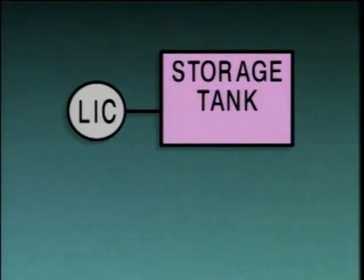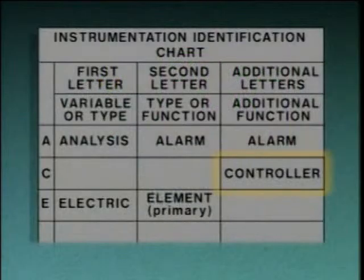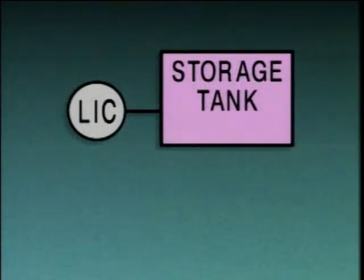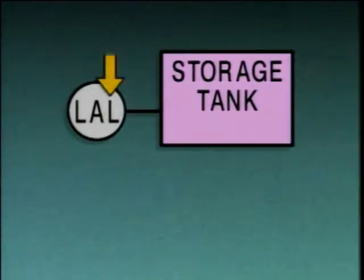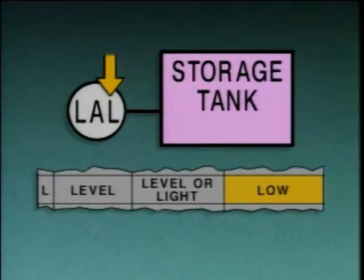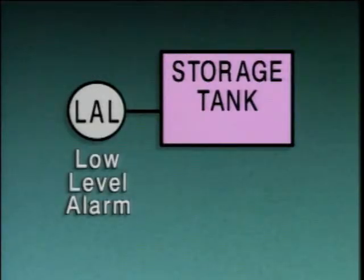Many instrument symbols contain more than two letters. This usually means that the instrument has more than one function. In this case, the third letter, C, means controller. So this is a level indicating controller. In some cases, the third letter is a modifier. For example, according to our identification chart, an L in the third position represents a low value for the process variable. The letters in the symbol stand for level, alarm, low. So this is a low-level alarm.